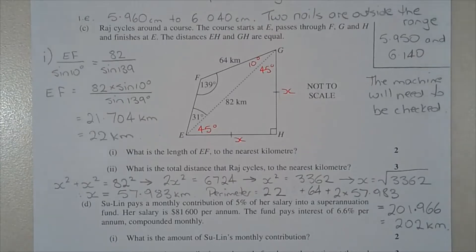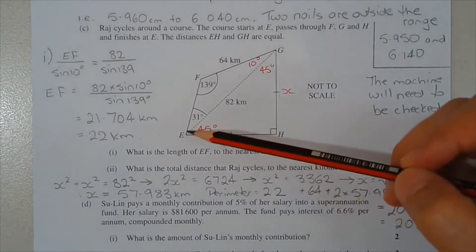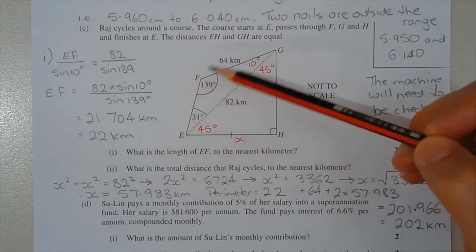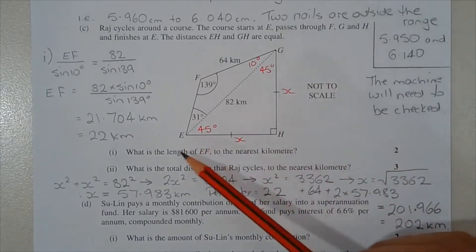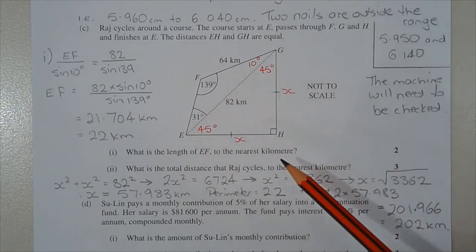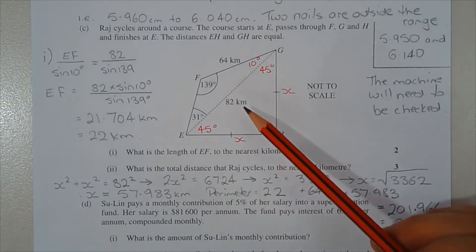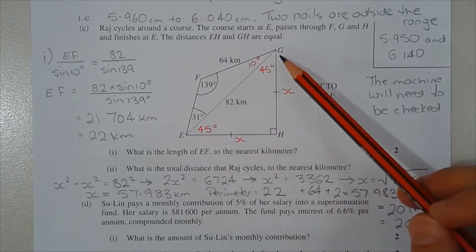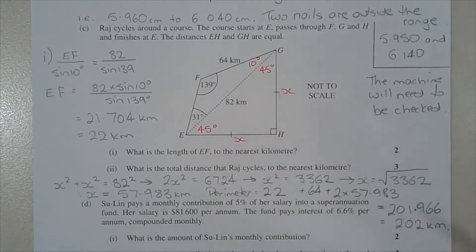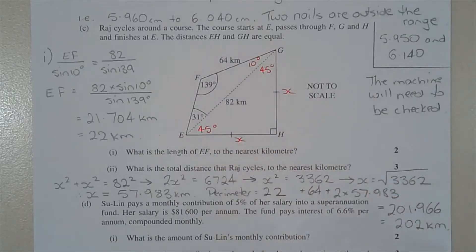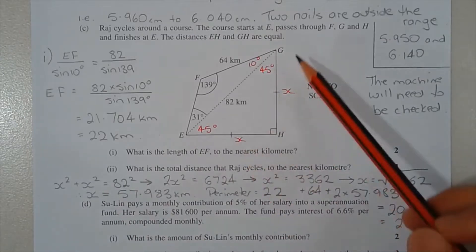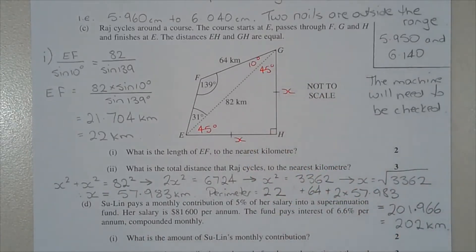Part 2: what is the total distance that Rash cycles to the nearest kilometre? We know EF = 22 km and FG = 64 km. We need sides EH and GH, which belong to the isosceles right angle triangle with hypotenuse EG = 82 km. Letting EH = GH = x, we apply Pythagoras theorem.